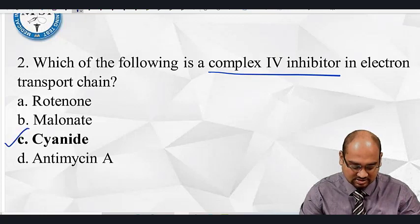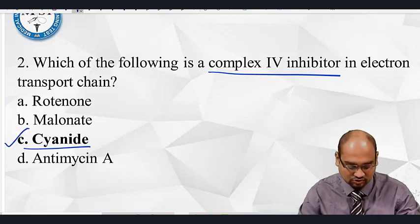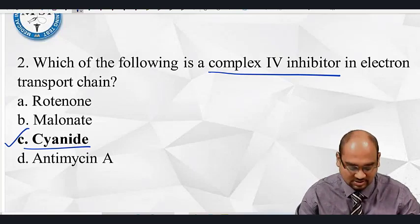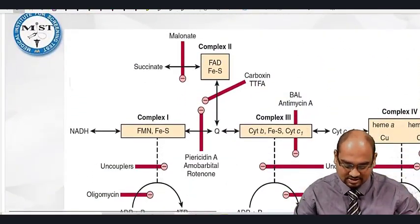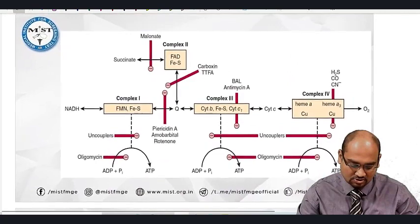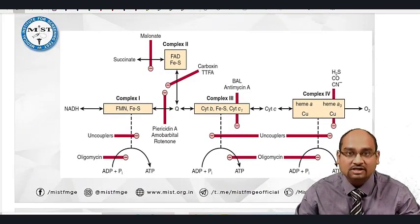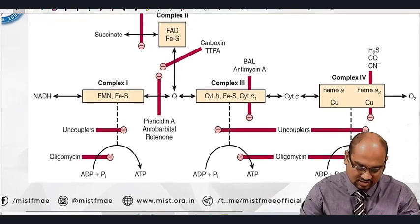The answer to this question was cyanide, because rotenone, malonate, and antimycin, these are not complex four inhibitors. Beta, let us quickly have a recap of the complexes and their inhibitors in electron transport chain.